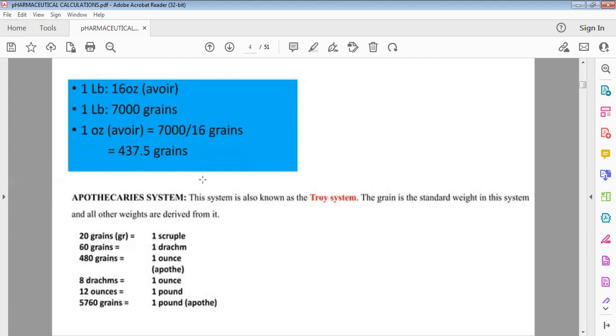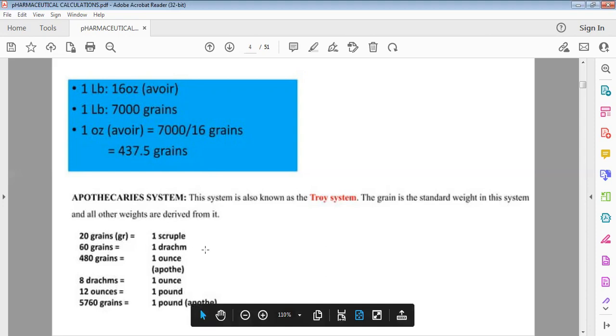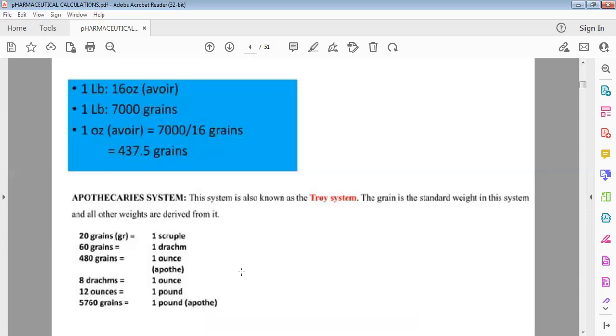The apothecary system is a Troy system with the same weights. In this system, 20 grains means one scruple. One scruple means a spoon. 60 grains means a drachm. 480 grains means an ounce. 8 drachms means an ounce. 12 ounces means a pound. 5,760 grains means a pound.